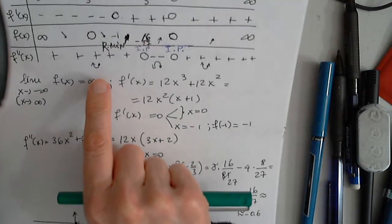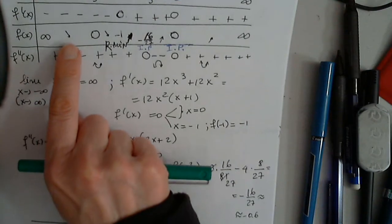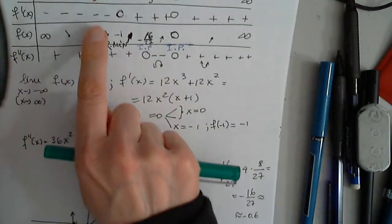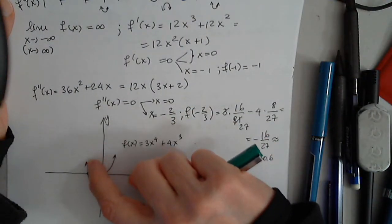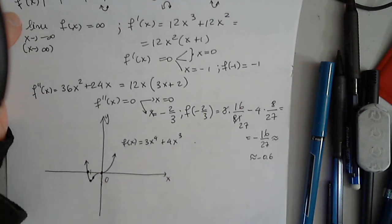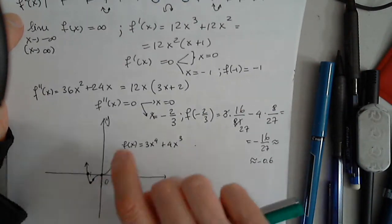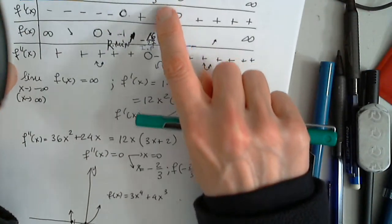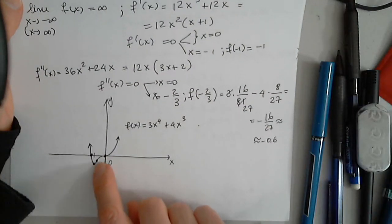The function is opening up, coming from positive infinity down to the x intercept, further down to the local or relative minimum. Goes through negative 4 thirds 0. Comes down to negative 1, negative 1. Increases until negative 2 thirds, negative 16 over 27. This point. And that is an inflection point.